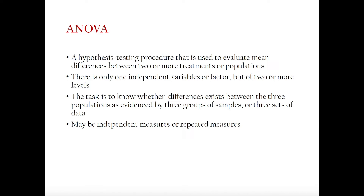ANOVA is another statistical analysis that can be used to test certain hypotheses. In many ways, it is quite similar to the t-test, which is the previous analysis we have studied. In particular, one-way ANOVA is also used when we have only one independent variable that is categorical, while our dependent variable is continuous.